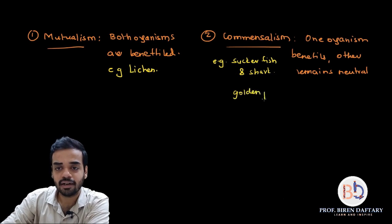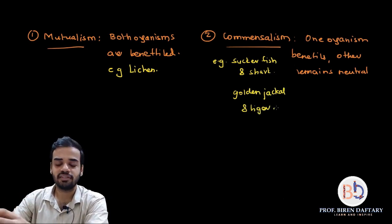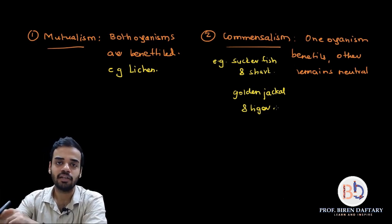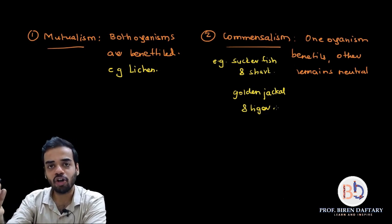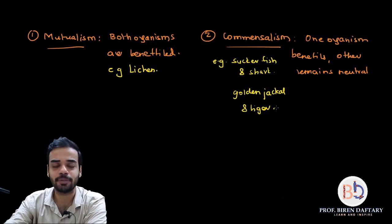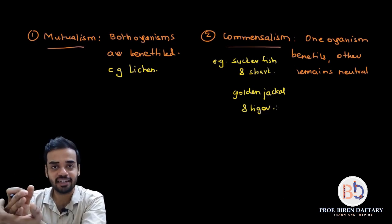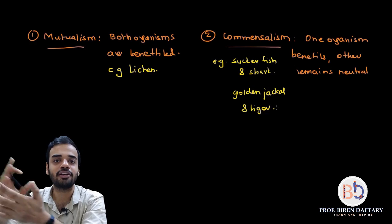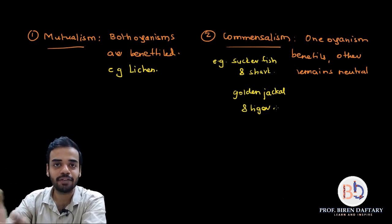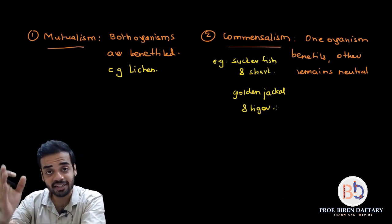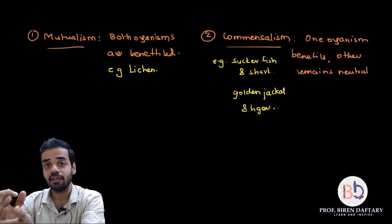The second example is the golden jackal and tiger, based on the Indian terrain. When tigers hunt and drag their prey, small bits of flesh drop along the way. The golden jackal follows the tiger at a safe distance and consumes those dropped pieces of meat. The golden jackal is getting benefited; the tiger is neither benefited nor harmed — it is in a neutral position. So this is another example of commensalism.